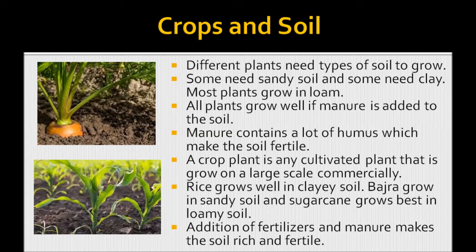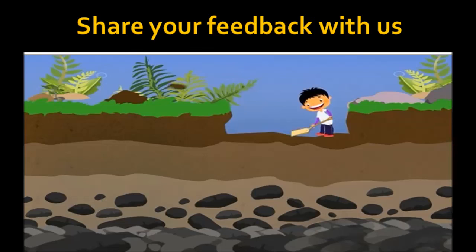A crop plant is any cultivated plant that is grown on a large scale commercially. Rice grows well in clay soil. Bajra grows in sandy soil. Sugarcane grows best on loamy soil. Addition of fertilizers and manure makes the soil rich and fertile, resulting in greater crop yield.